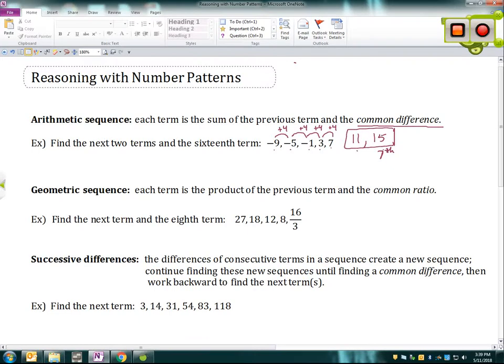And to get to the sixteenth term, I need nine more terms. So I can think of this as I need to add four nine more times. So in other words, I need to add 36. So I can take 15 and add 36, which would get me to 51. So the sixteenth term is 51. So that will work as well.